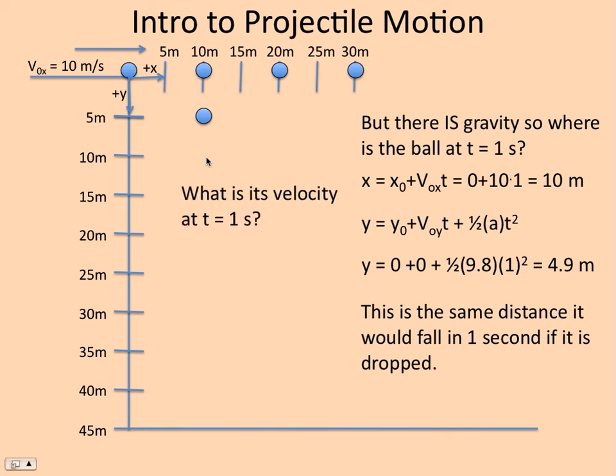How fast is it going? We know the x velocity. It's just a constant 10 meters per second. So in projectile motion, the final x velocity, or the instantaneous x velocity, is always equal to the initial, ignoring air resistance.